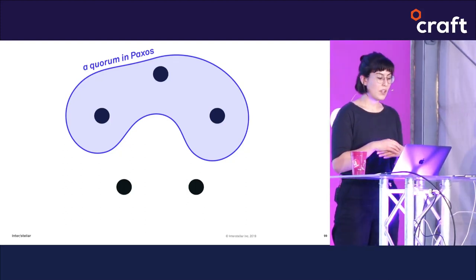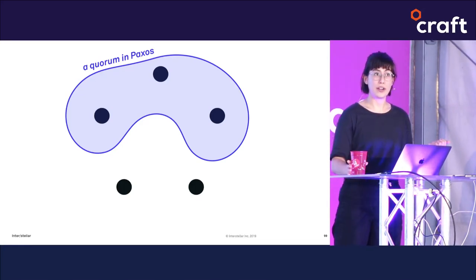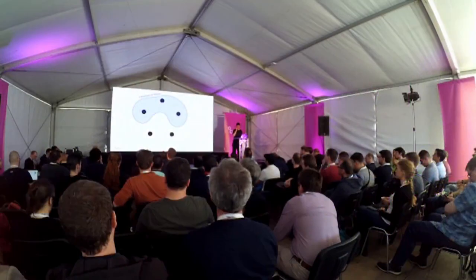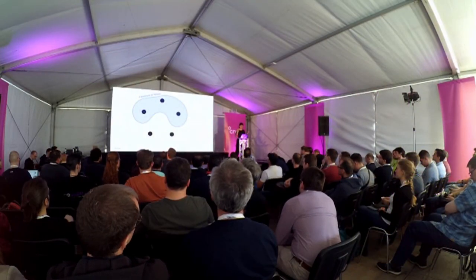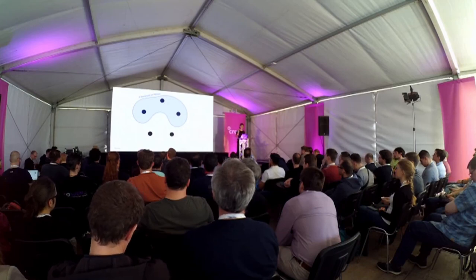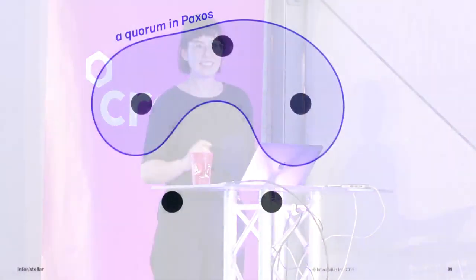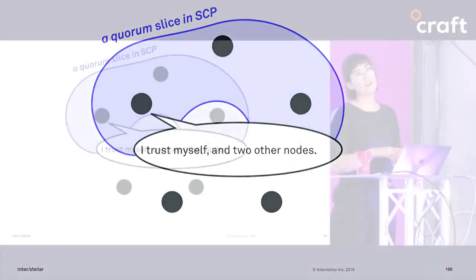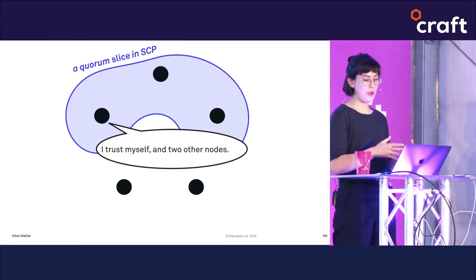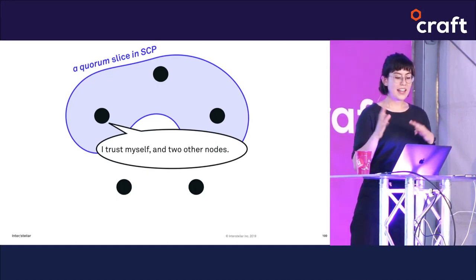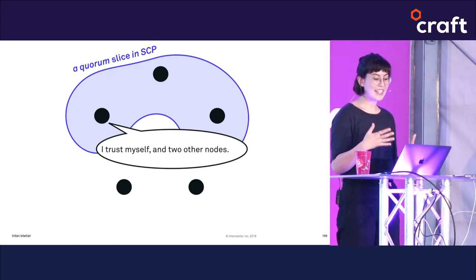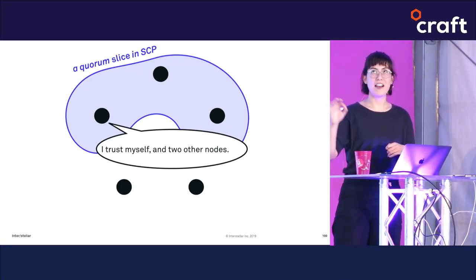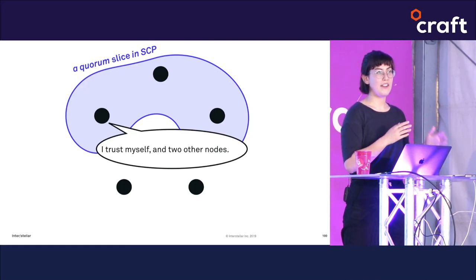In a closed system like Paxos or PBFT, we have the concept of a quorum — the number of votes you need to consider a value prepared or accepted, typically a majority or supermajority. But in an open network where the number of nodes can fluctuate and attackers can create spurious extra nodes, the concept of majority is kind of meaningless. The approach SCP takes is to let each node choose its own quorum: each node takes a parochial view and considers a value accepted once enough nodes in its personal quorum have accepted it.